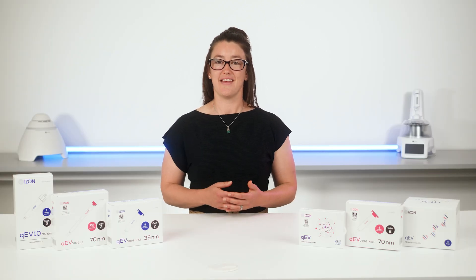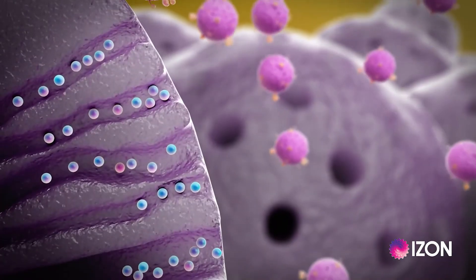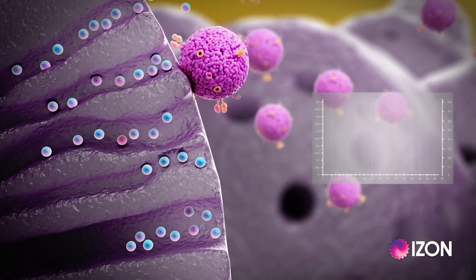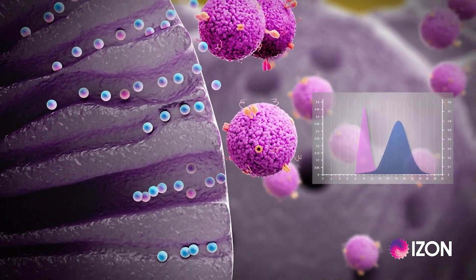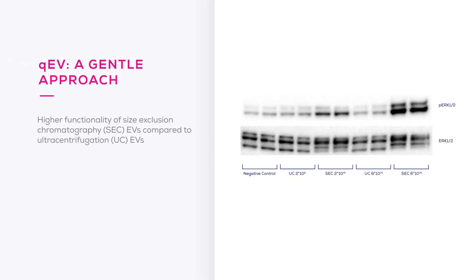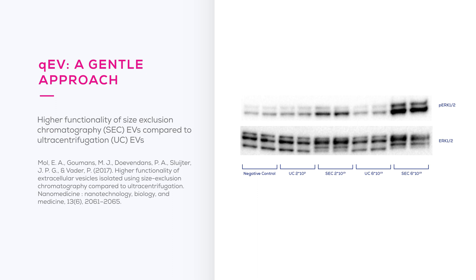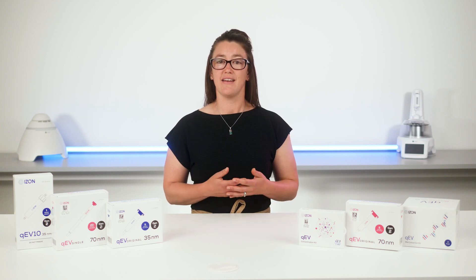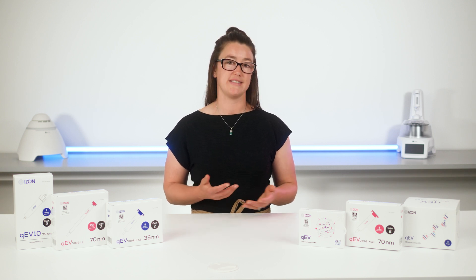QEV columns on the other hand provide a gentle approach. EVs flow down the column only under the pressure of gravity, allowing you to isolate intact and functional EVs. For example, EVs isolated using size exclusion chromatography are more effective at causing the phosphorylation of ERK than EVs isolated using ultracentrifugation. We believe that this is an essential aspect of EV isolation. What use is an EV isolate if your EVs have broken open or aggregated?